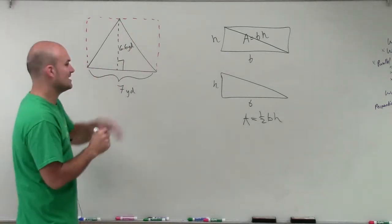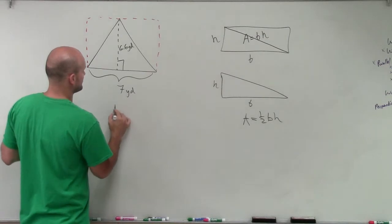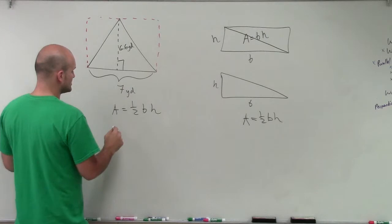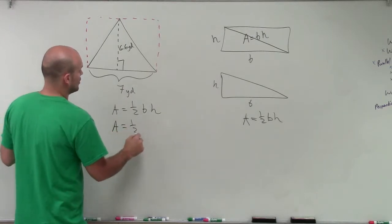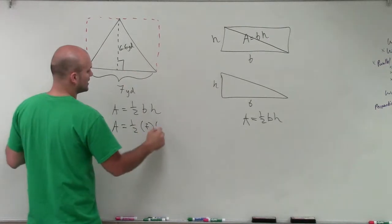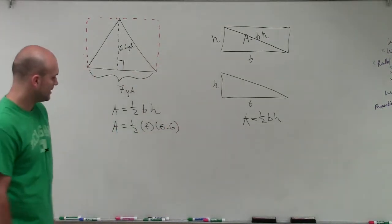So to find the area here, I'm just going to have area equals one half base times height. So in this case, I have area equals one half times my base, which is 7, times my height, which is 6.6.